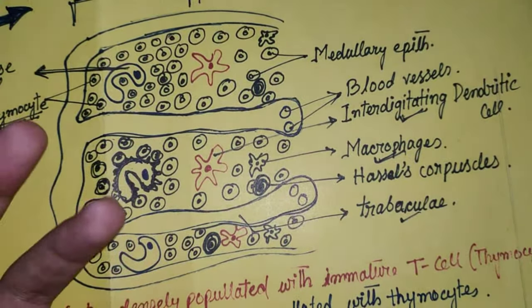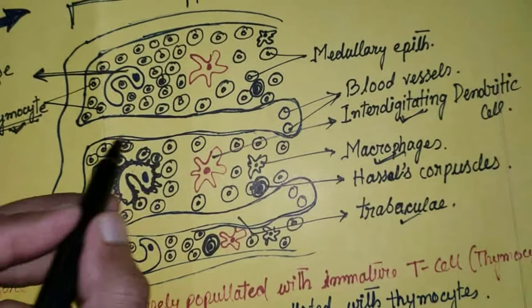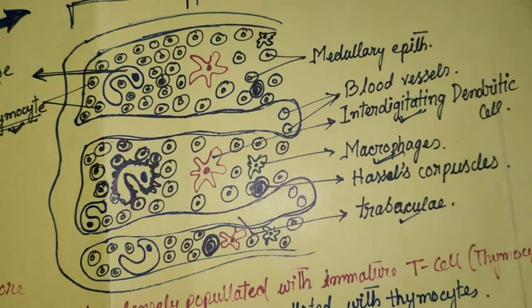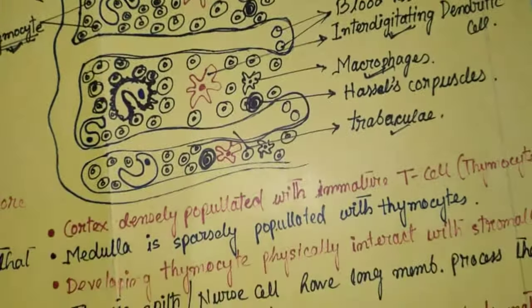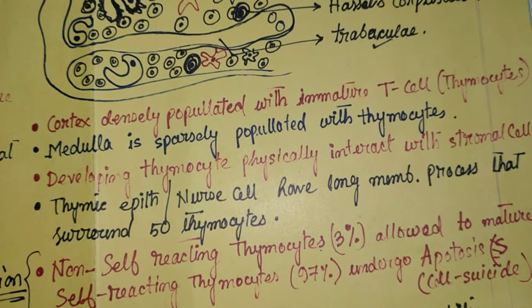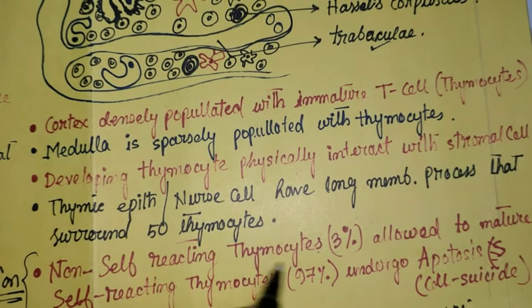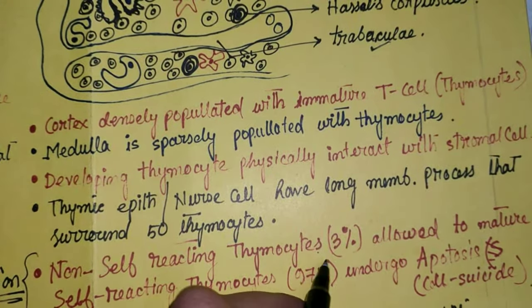Each nurse cell can keep around 50 thymocytes attached with it simultaneously. Now, an important activity inside the thymus: non-self-reacting thymocytes are allowed to mature, whereas self-reacting thymocytes undergo apoptosis. This is very important.